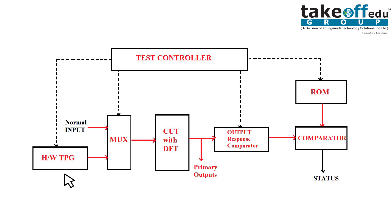This is the architecture for BIST. You'll have a hardware test pattern generator which is used for generating test patterns, and one mux to send data to the CUT. When BIST is enabled, the data sent to the CUT will be the test pattern; otherwise, the normal input will be sent.